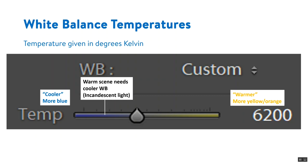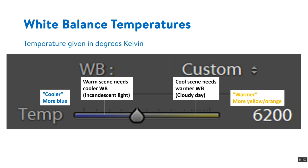So it's a bit counterintuitive, but if you have a warm scene, like something with incandescent light or something that's naturally a bit yellow, you need a cooler white balance to compensate to get the right colors. If you have a cool scene, like on a cloudy day for example, you need a warmer white balance to compensate.